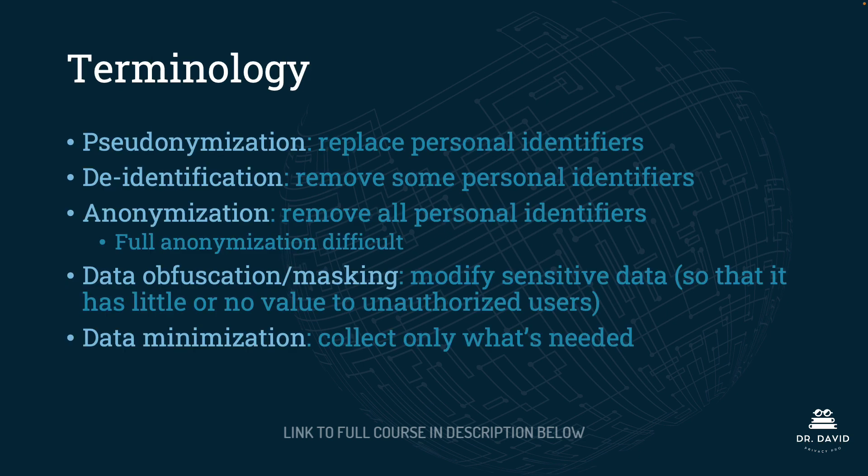There are a few terms you need to know for the exam in addition to the privacy enhancing technologies we're about to look at. Pseudonymization is where we have a personal identifier, such as a name, and we change that name from something like Kyle David to something very generic like Joe Smith. De-identification is where we go through a dataset and remove some, but perhaps not all, of the personal identifiers. Anonymization is where we remove all personal identifiers with data obfuscation or data masking — modifying sensitive data so that it has little or no value to unauthorized users. Finally, data minimization is where we are collecting only the data that's necessary for the particular business function.